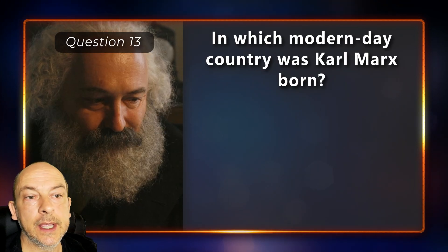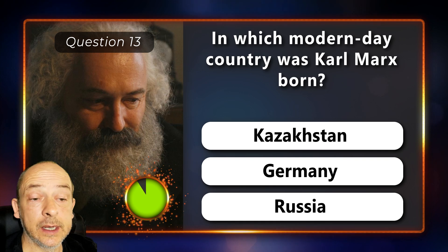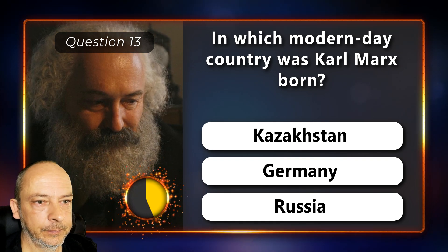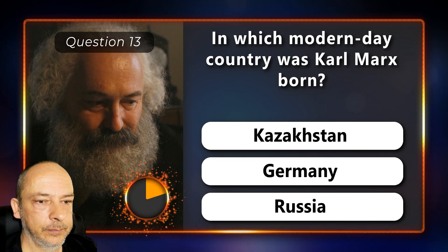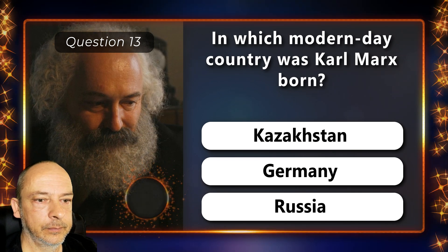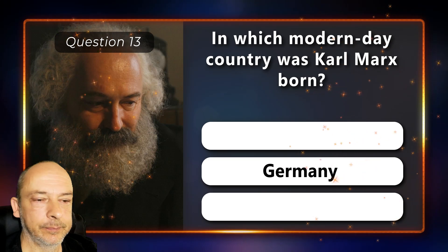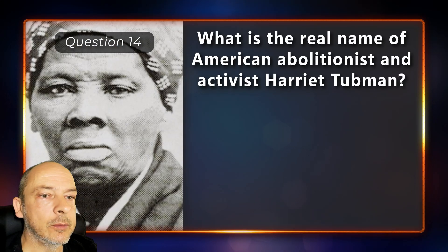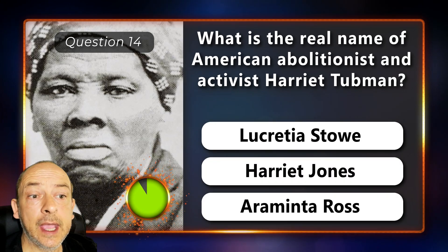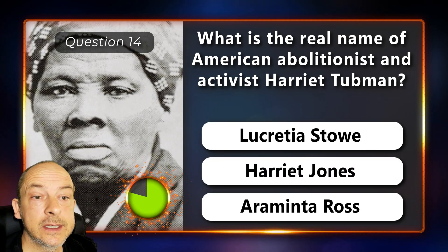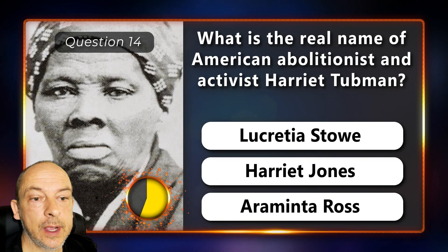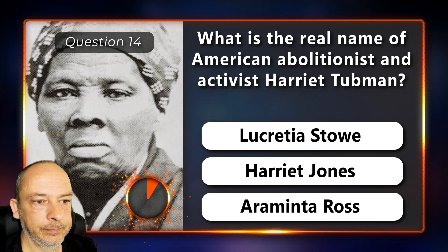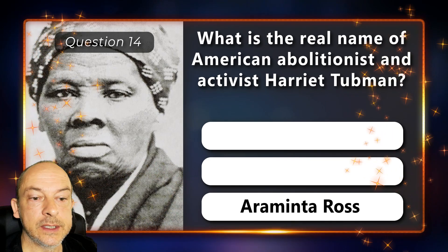In which modern day country was Karl Marx born — in Kazakhstan, Germany, or Russia? He was born in Germany. What is the real name of American abolitionist and activist Harriet Tubman — Lucretia Stow, Harriet Jones, or Araminta Ross? Araminta Ross.